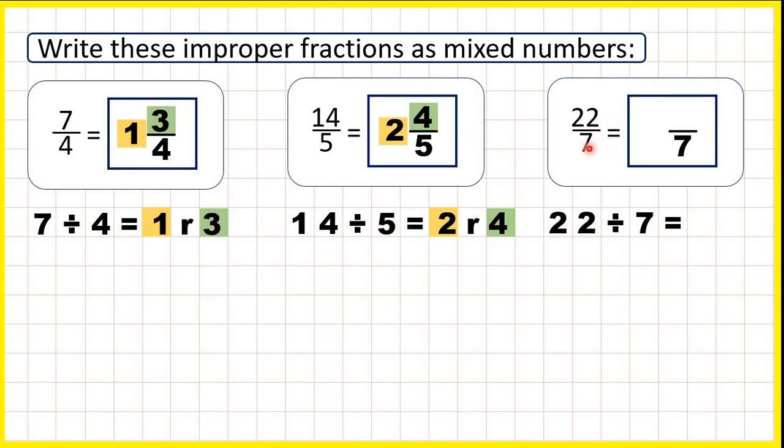22 divided by 7 is 3, remainder 1, because 3 times 7 is 21, but then from 21, we need 1 more to get to 22.